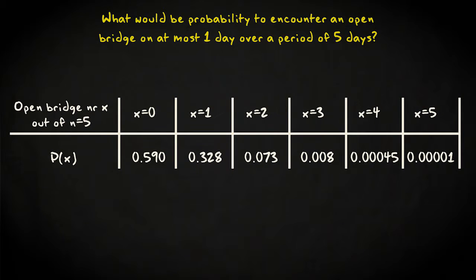Here, we can make good use of the probability table that was just created. We are looking for the total probability of the case where the bridge was never open or open on just one day. So, the sum of these two probabilities, which is 0.92.